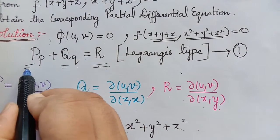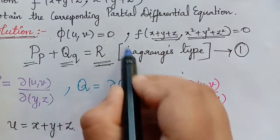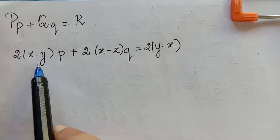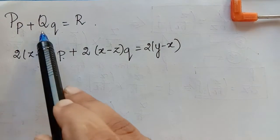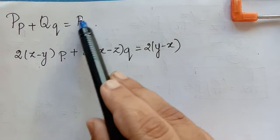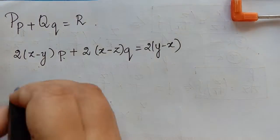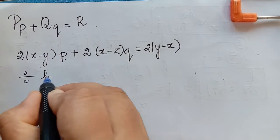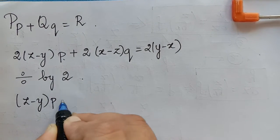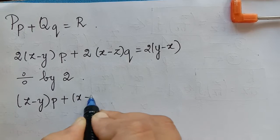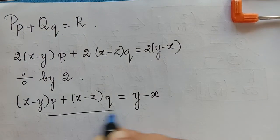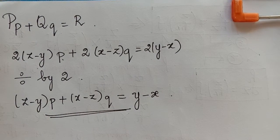Substituting the values of P, Q, and R into equation 1, we obtain: 2(z−y)·p + 2(x−z)·q = 2(y−x). Dividing throughout by 2, we obtain (z−y)p + (x−z)q = y−x. This is the required partial differential equation that we have obtained.